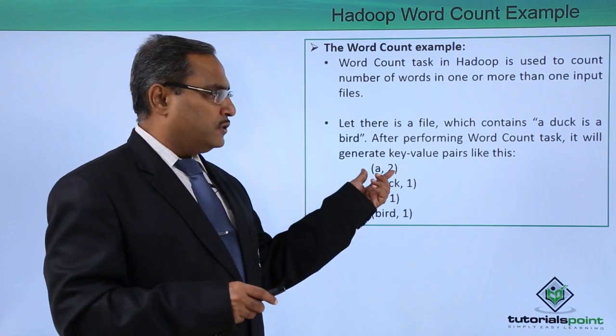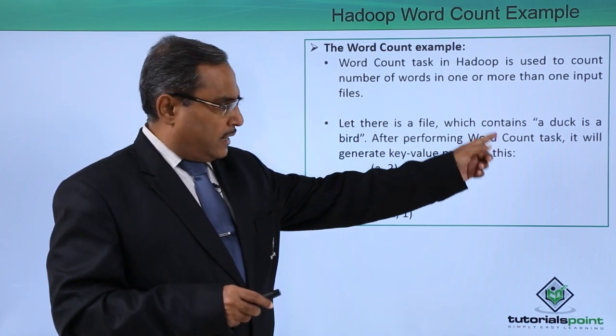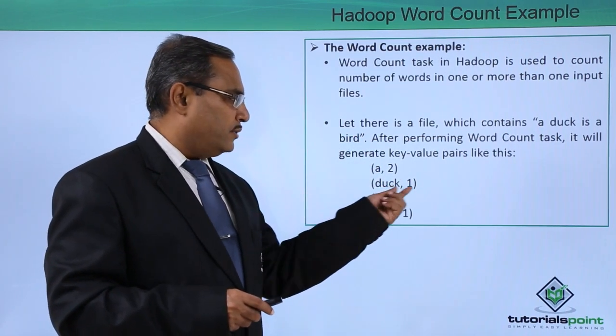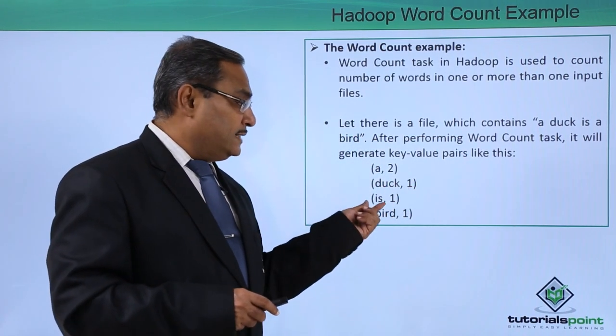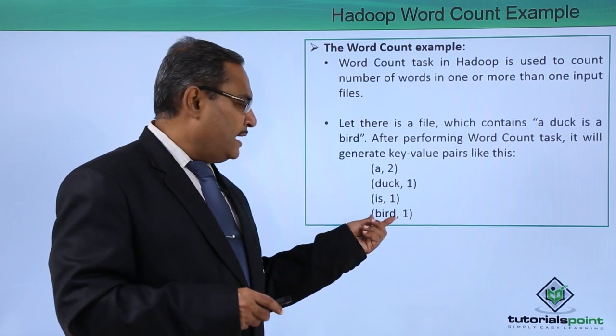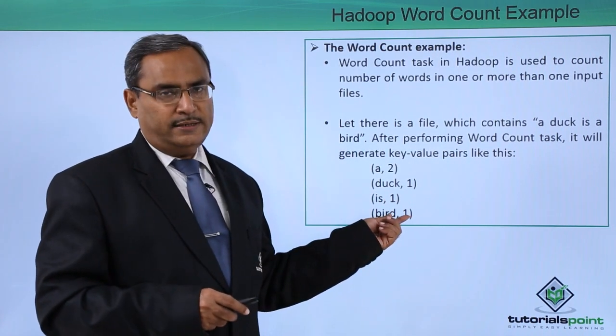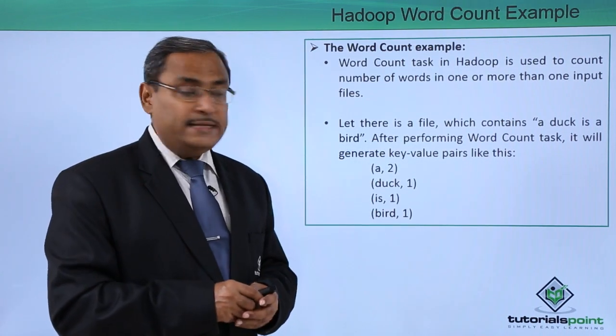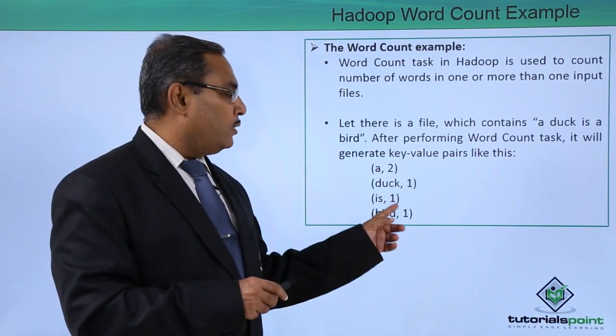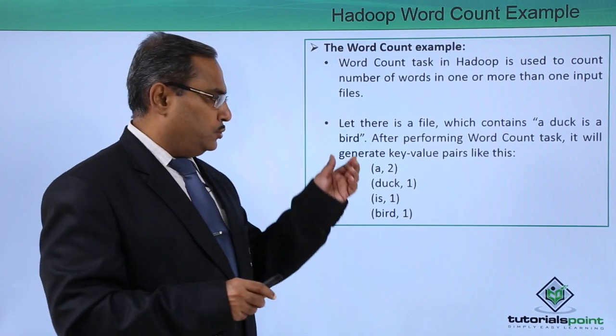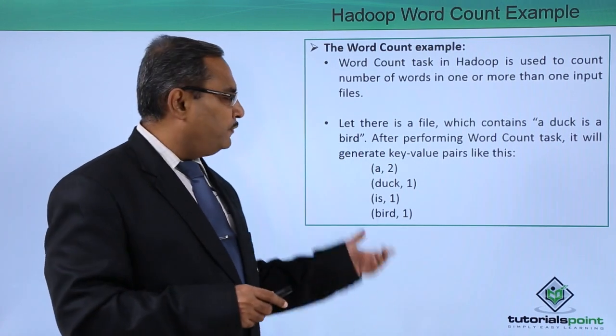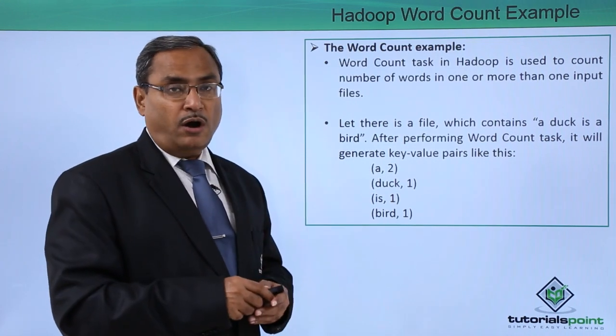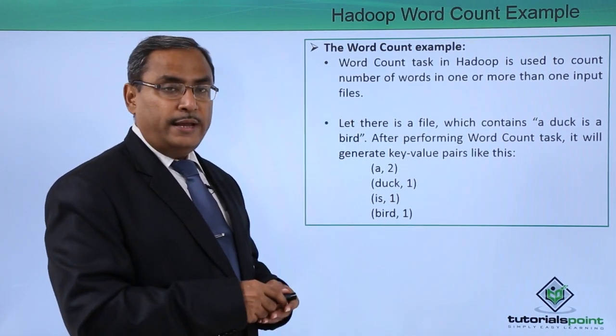That is, 'a' has occurred two times. You can find that 'a duck is a bird'. So 'a' has occurred two times, 'duck' one time, 'is' one time, and 'bird' one time. These words - a, duck, is, bird - they are the keys, and the counts - 2, 1, 1, 1 - they are the values. This outcome will be in the form of key value pairs, and that is the basic concept of word count example in our Hadoop.